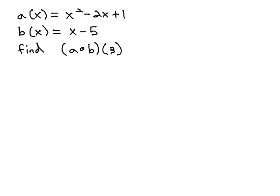In this video, we're going to take a look at what is called a composition of function. Here, we have a(x) = x² - 2x + 1, and b(x) = x - 5, and we're going to find a∘b(3).